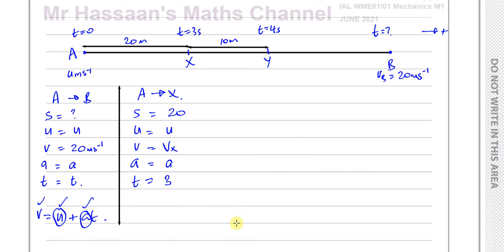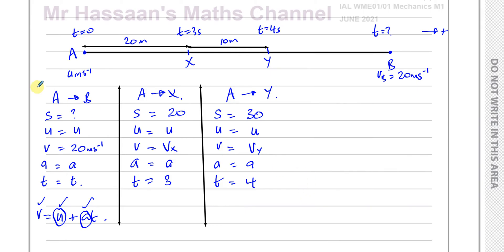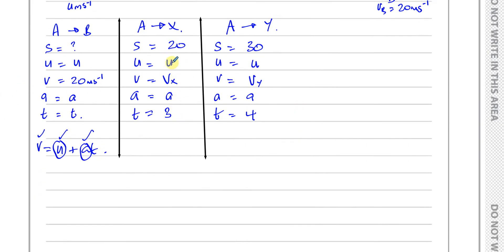Now let's look at between A and Y. Again with SUVAT: S equals 30 meters, U is the same initial speed at A, V at Y is unknown, acceleration A is constant throughout — the same A in all three cases — and T equals 4 seconds. So the acceleration A and initial speed U are the same in all three situations.